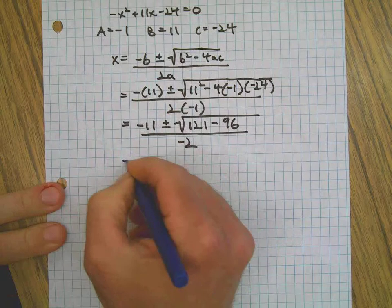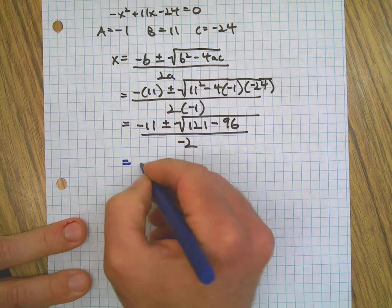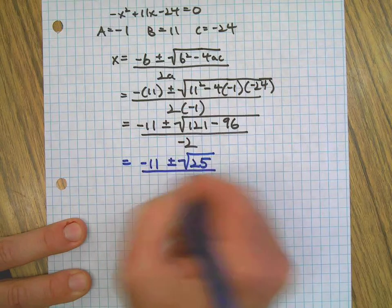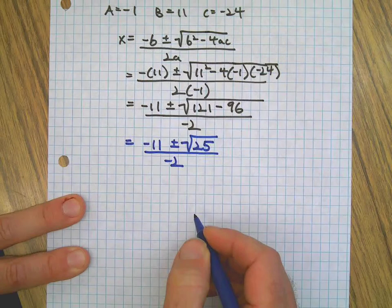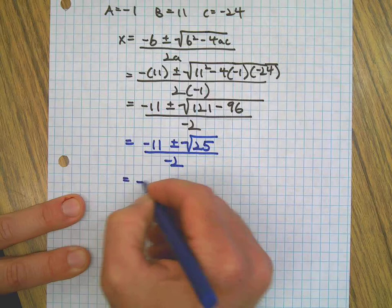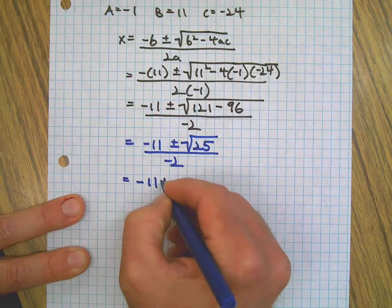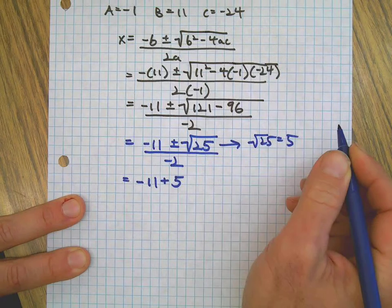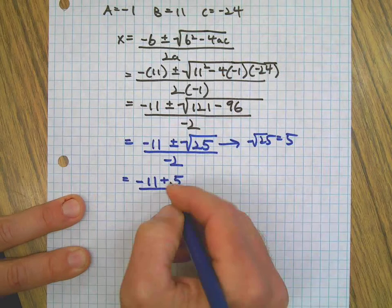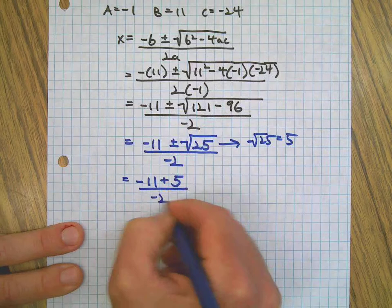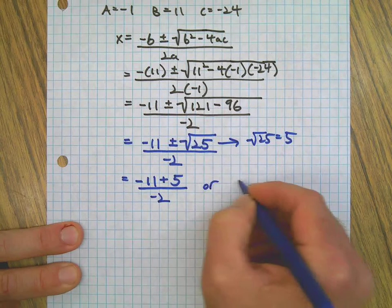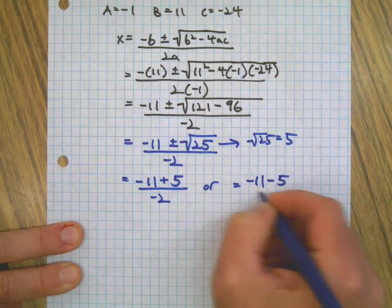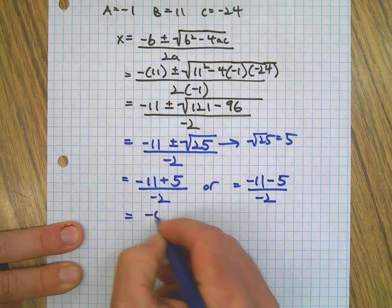I'm going to change colors real quick. It's just a formality now. Negative 11 plus or minus the square root of 25 - that's 5 - all over negative 2. What that means is negative 11 plus 5, square root of 25 equals 5, which is negative 6 over negative 2, or it equals negative 11 minus 5 over negative 2.